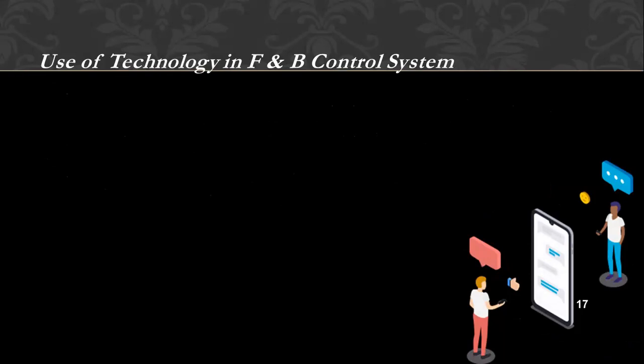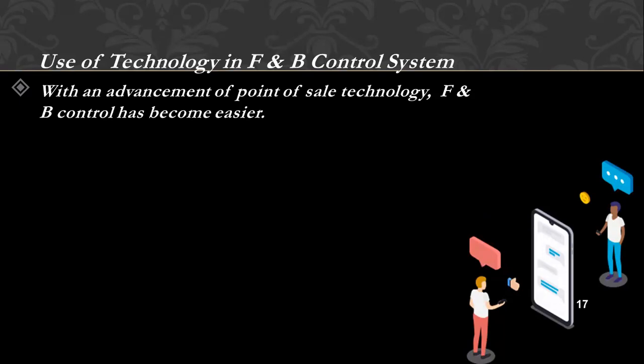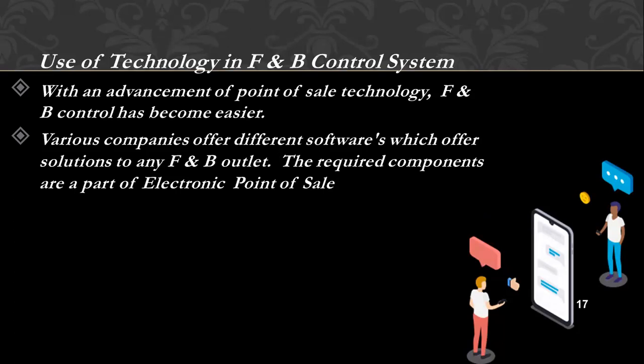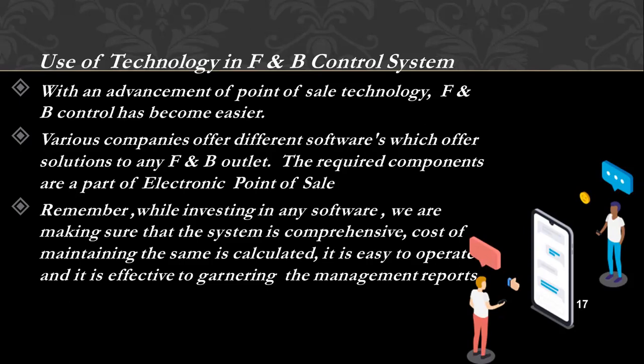Use of technology in the F&B control system: this is extremely important today as we move towards having everything on a digital platform, with manual documentation, manual KOT systems, BOT systems, and order giving becoming less common. With the advancement of point of sale technology, food and beverage control has become easier. Various companies offer different software solutions for any food and beverage output. When investing in any software, make sure the system is comprehensive, the cost of maintaining it is calculated, it is easy to operate, and it is effective in generating various management reports.